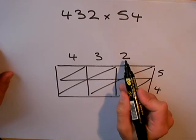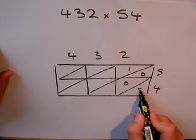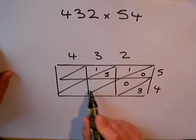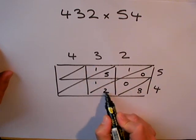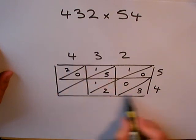First, let's fill in the grid. Two fives are 10. And two fours are 8. Three fives are 15. And three fours are 12. Four fives are 20. And four fours are 16.